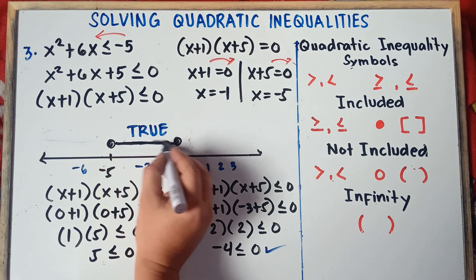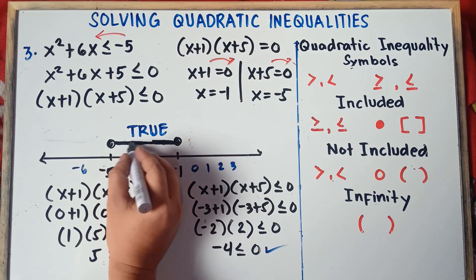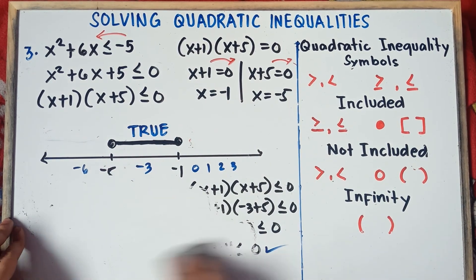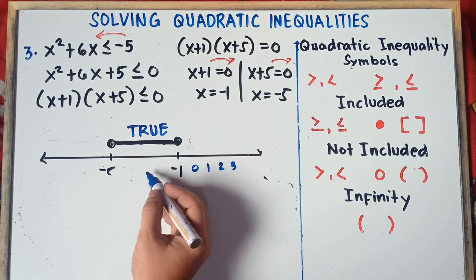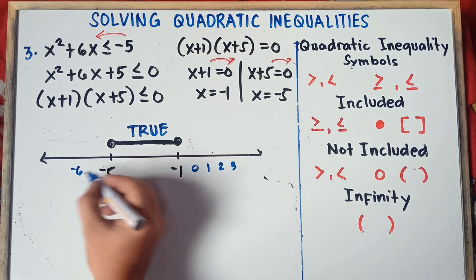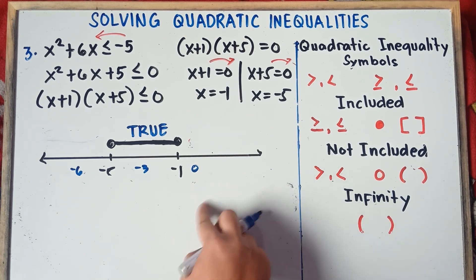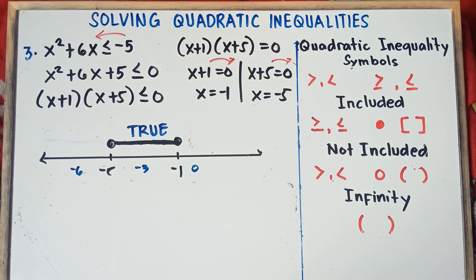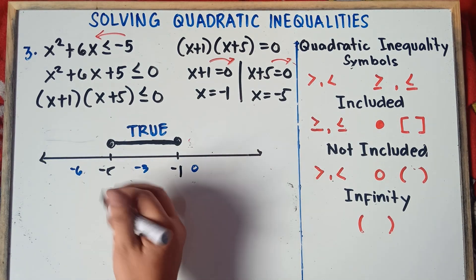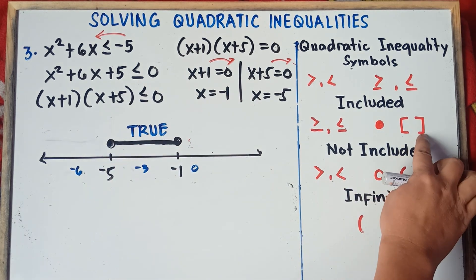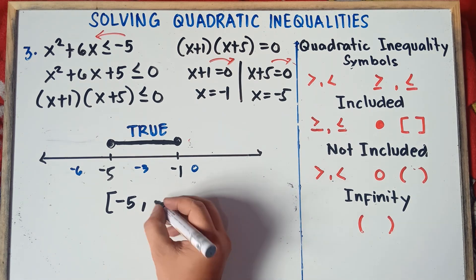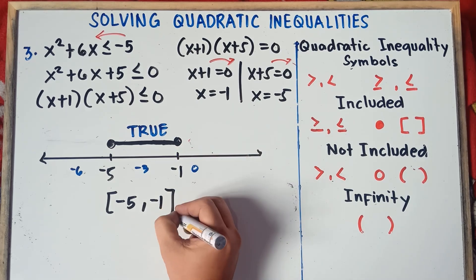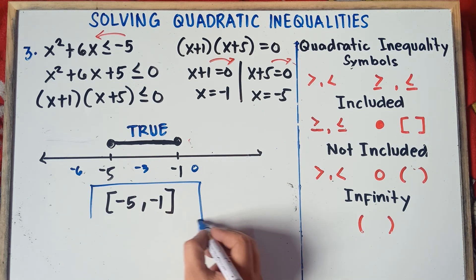Now let's make our solution set. We selected negative 6, negative 3, and 0 as test values. For interval notation, reading left to right: since negative 5 has a closed circle we use a bracket, so the interval notation is [-5, -1]. Since negative 1 also has a closed circle we use a closing bracket. That is the answer for interval notation — very easy.